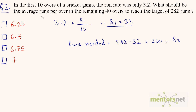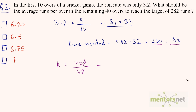Now we calculate the average runs for 40 overs. Average equals S2, which is 250, divided by the number of overs, which is 40. The zeros cancel, giving 25 divided by 4, which equals 6.25. So the answer is option A.